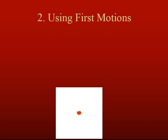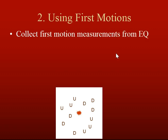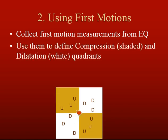We can look at seismic recordings and use the first motions — the first direction the seismogram moves when the earthquake waves arrive. Here's an example of collected first motion measurements from an earthquake. We've got stations showing upward motions and stations showing downward motions, with the earthquake at the center. You use the upward and downward motions to find the compressional shaded quadrants and the dilational quadrants.